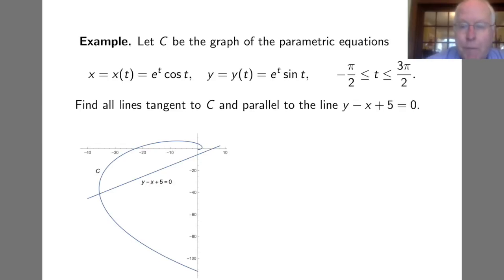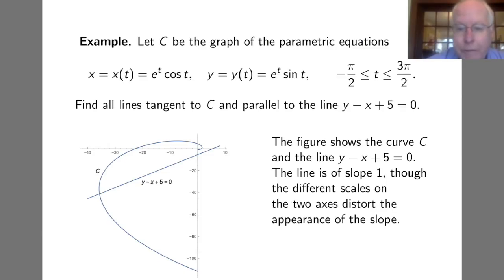We're going to let C be the graph of the parametric equations given by x equals e^t cos t and y equals e^t sin t. We'll restrict t to the interval -π/2 to 3π/2. Our goal is to find the lines tangent to C and parallel to the line with equation y - x + 5 = 0. In the picture we've shown the graph of C and the line. The line has slope 1, although the distorted scales on the x and y axes kind of distort the appearance of the slope.